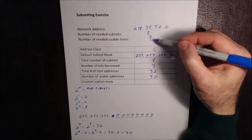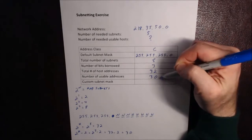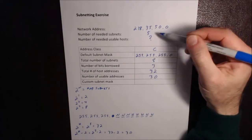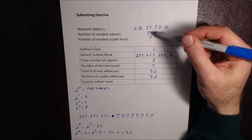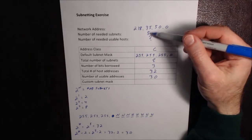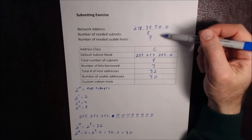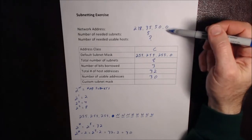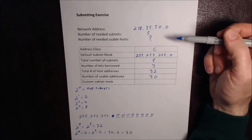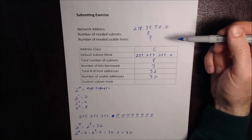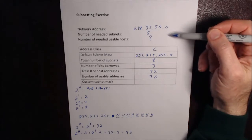Even though the problem didn't tell us how many usable hosts we needed, whatever that number is, it could not be greater than 30. Once in a while, you'll see a problem that gives you two numbers that are impossible to match — for example, if it said we needed nine subnets and 40 usable hosts. That cannot be done in a Class C sized network. Sometimes the answer is actually none of the above or impossible, though typically it's something you can calculate.